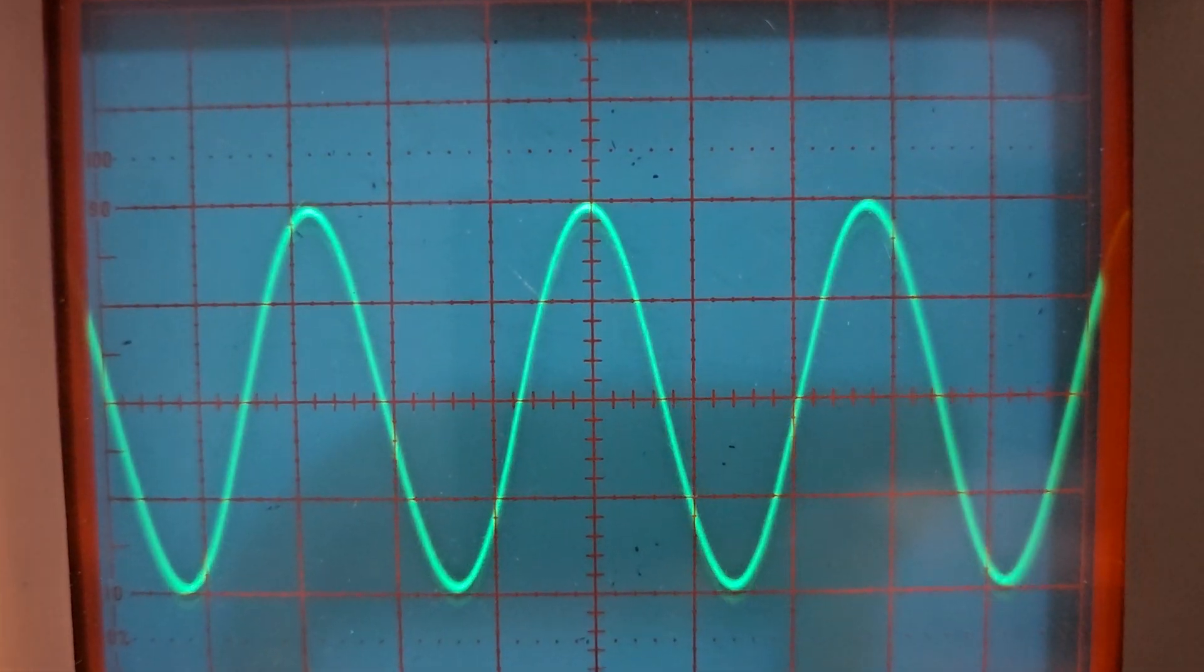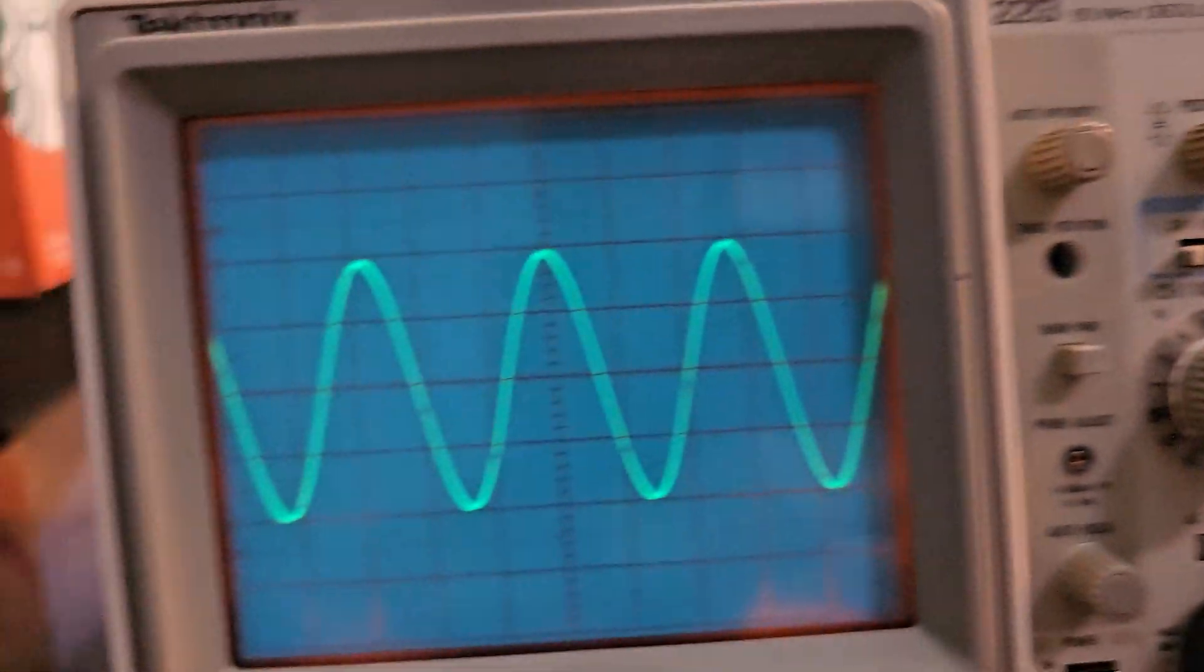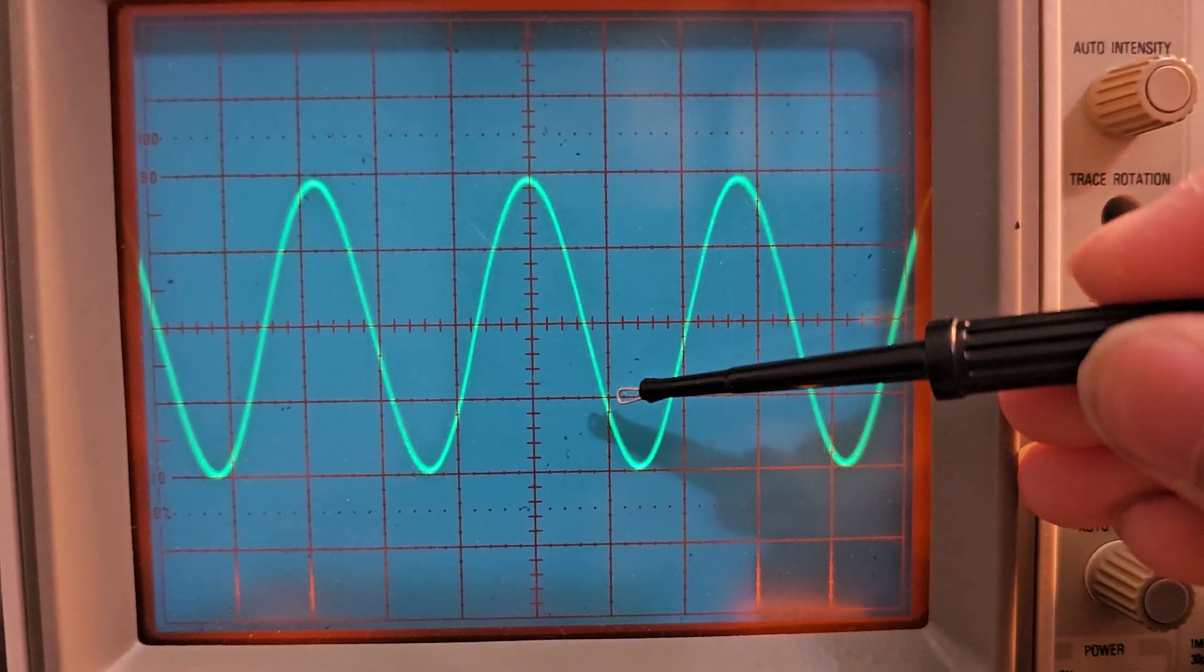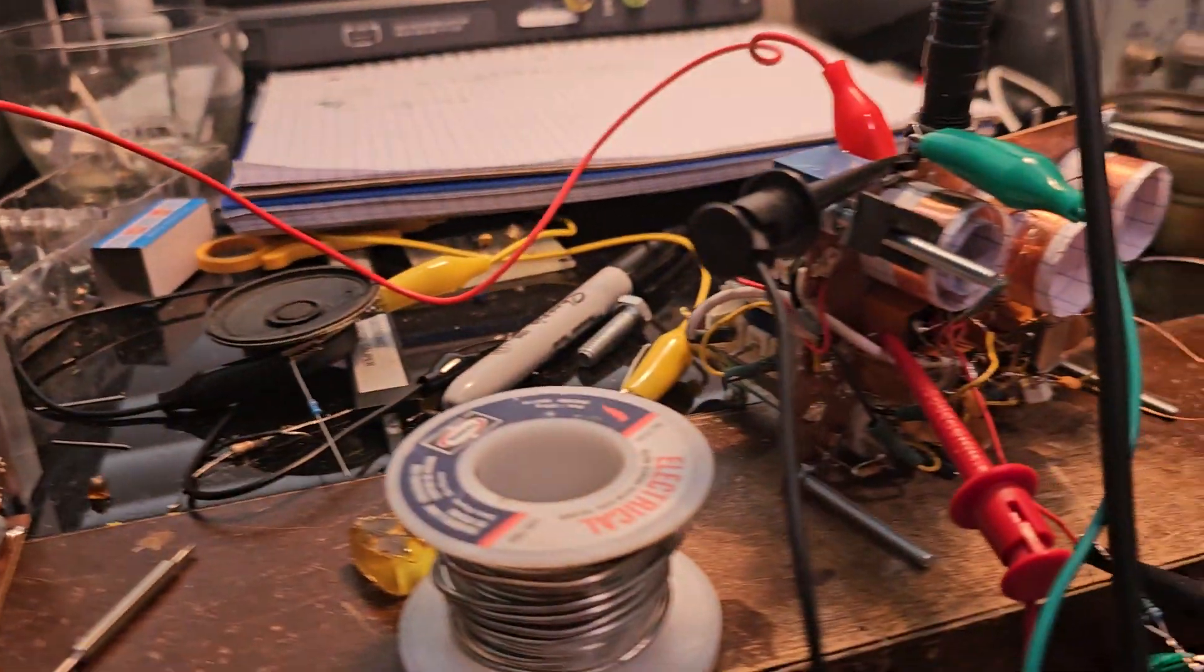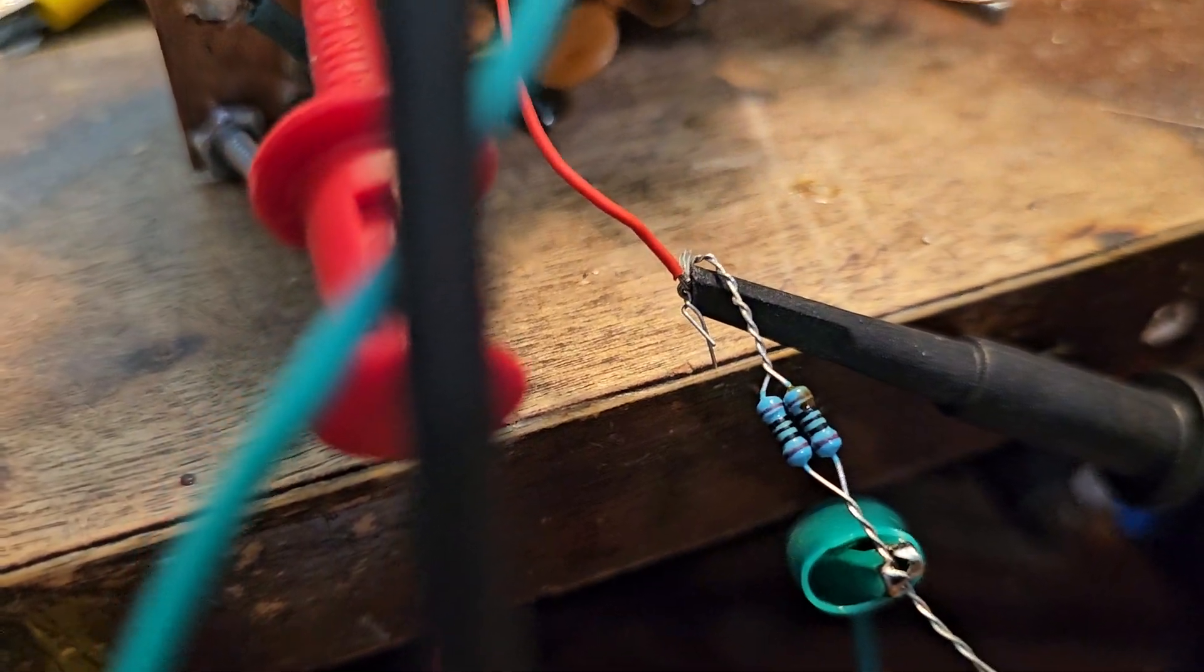I have here an oscilloscope and it's set at 5 volts per division. So let's count the peak-to-peak voltage: 5, 10, 15, 20 volts peak-to-peak. So this thing is generating 20 volts peak-to-peak with a 50 ohm load.